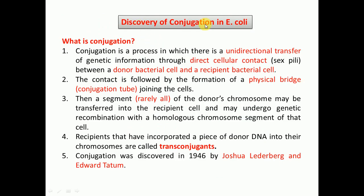Before going into the details of the discovery of conjugation in E. coli, we must know what conjugation is. Conjugation is a process in which there is a unidirectional transfer of genetic information through direct cellular contact via sex pili between a donor bacterial cell and a recipient bacterial cell. The contact is followed by the formation of a physical bridge known as the conjugation tube that connects the donor and the recipient bacterial cell. A segment, or rarely all, of the donor's chromosome may be transferred into the recipient cell and may undergo genetic recombination with the homologous chromosome segment of that cell.